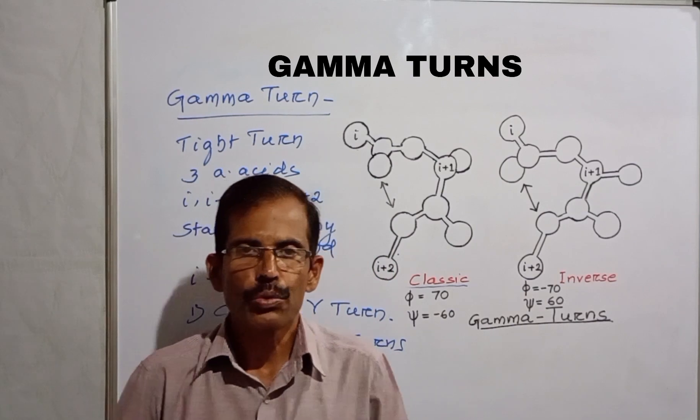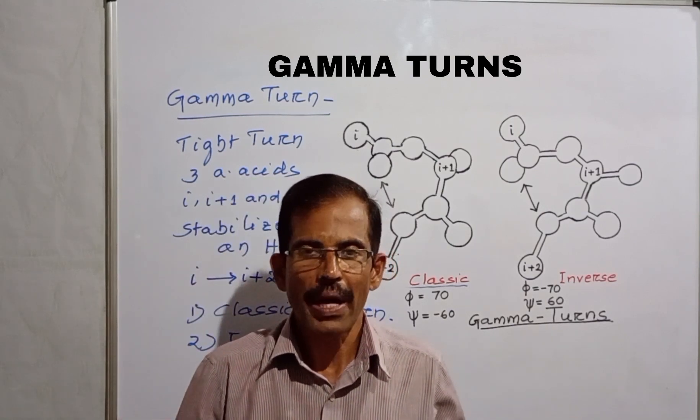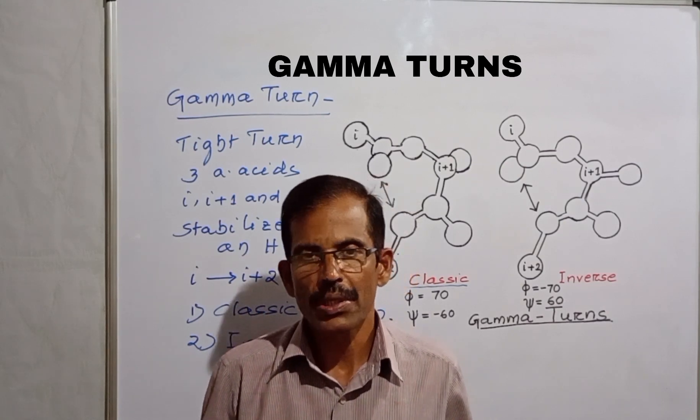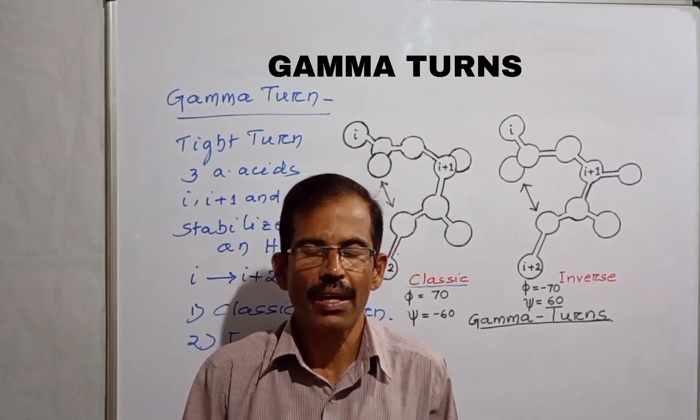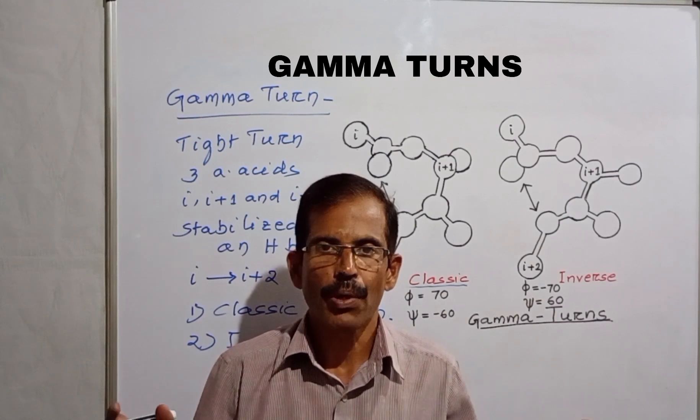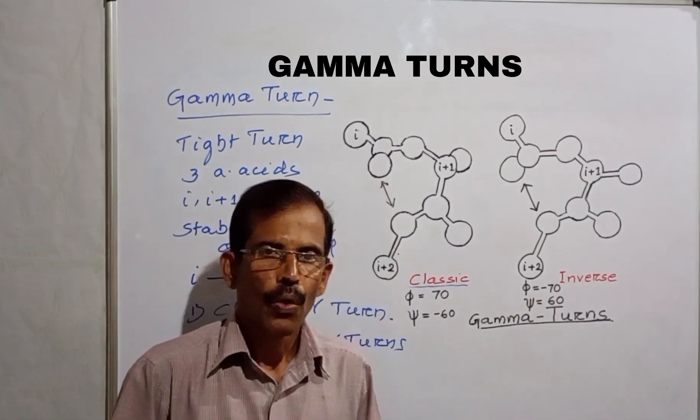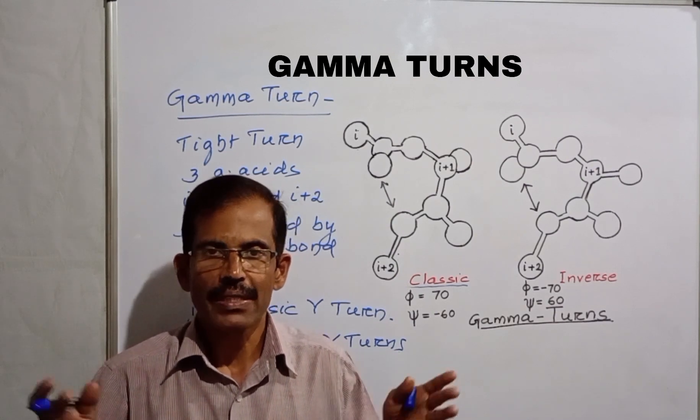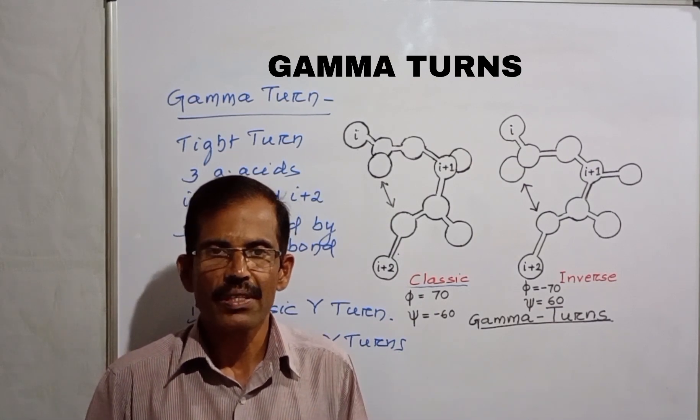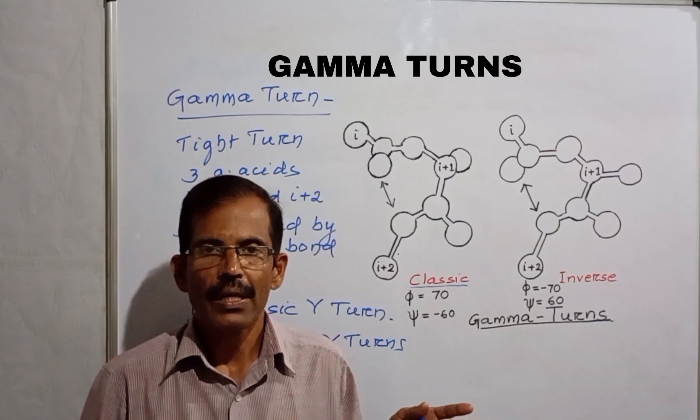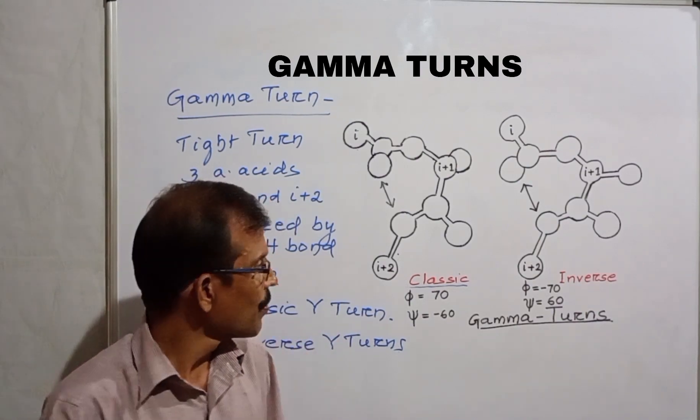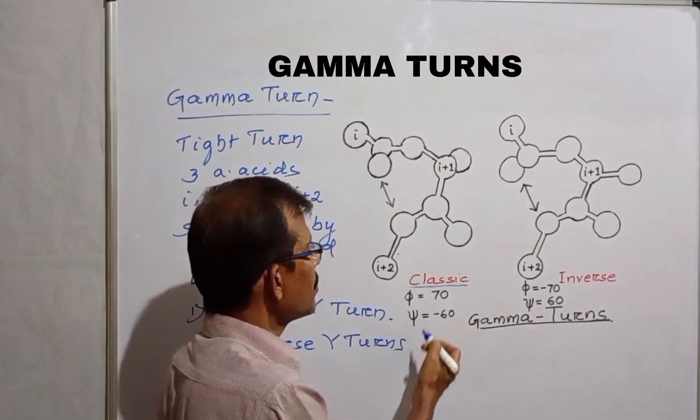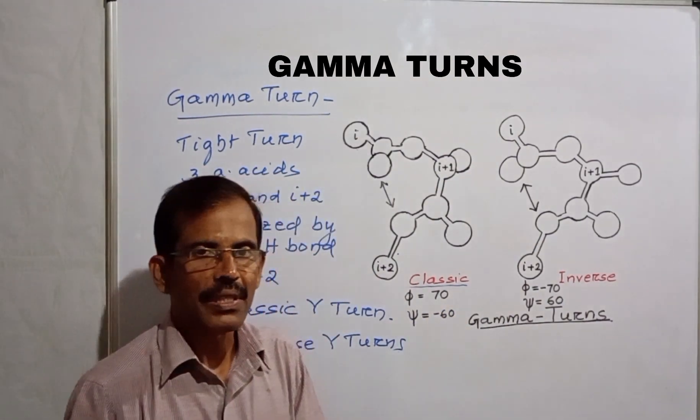They are usually found at the loop ends of beta hairpin. Except one, all are associated with the reversal in the direction of the polypeptide chain. One Classic Gamma Turn occurs at the edge of the second hypervariable region of the light chain in some immunoglobulins. For Classic Gamma Turns, Phi is equal to 70 and Psi is equal to minus 60.